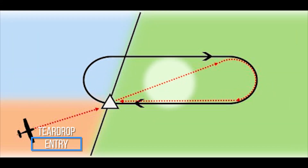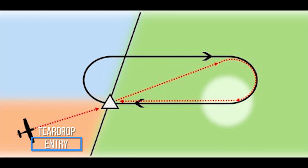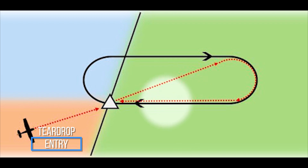The pilot flies this heading for a period of one minute, then turns in the same direction of the holding pattern to intercept the inbound holding course. Upon intercepting the inbound leg, the pilot should notify air traffic control that they are established in the hold.